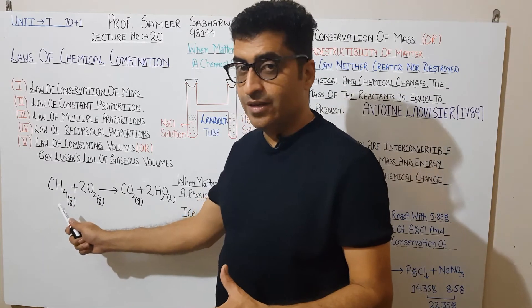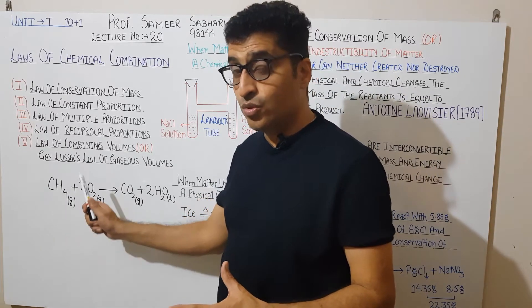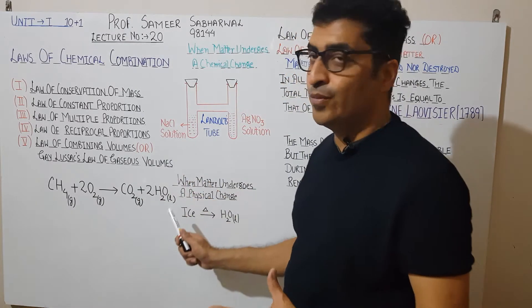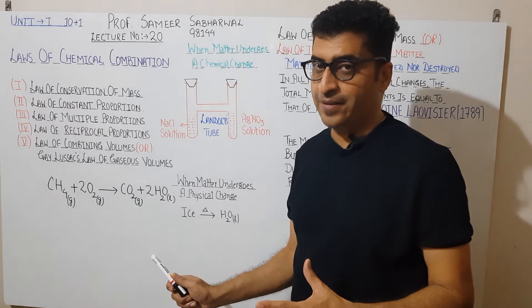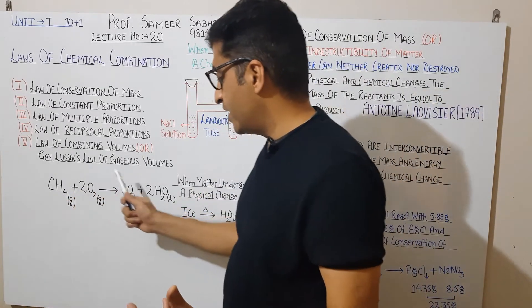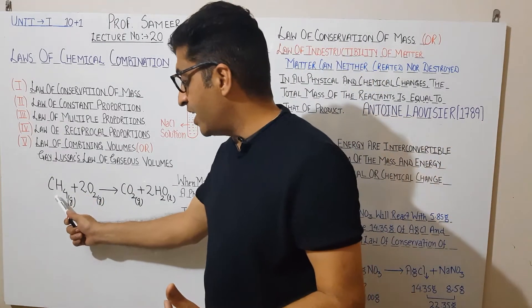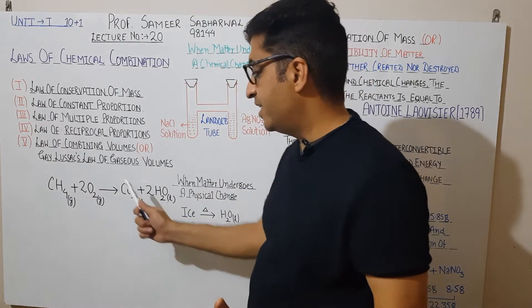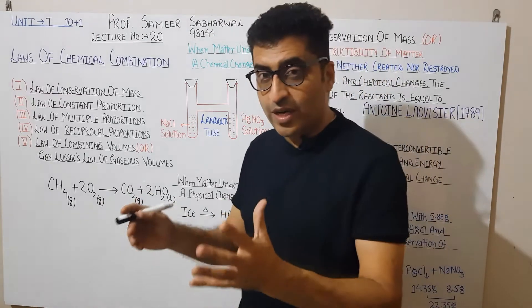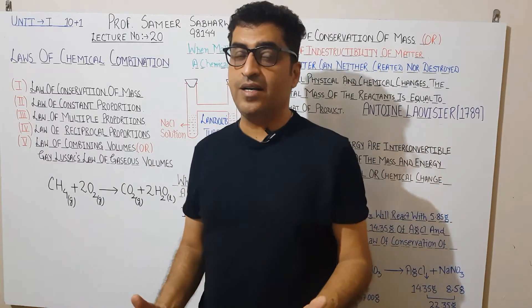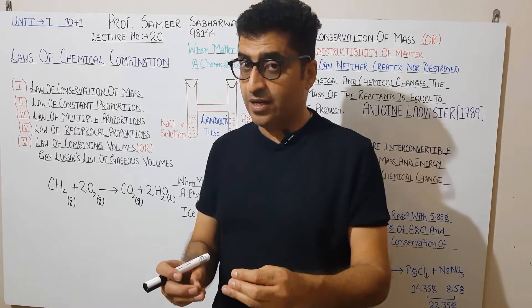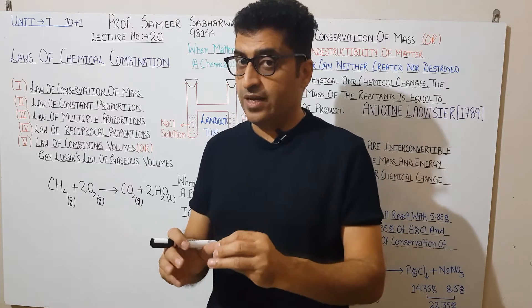One molecule of methane reacts with two molecules of oxygen to produce one molecule of carbon dioxide and two molecules of water. Notice: the carbon present in the reactants appears in the products. Hydrogen: 4 on the left, 4 on the right. Oxygen: 4 on the left, 4 on the right. So the reactants react and become products.